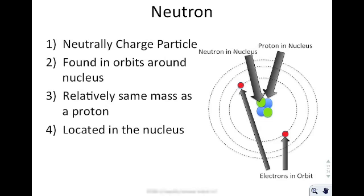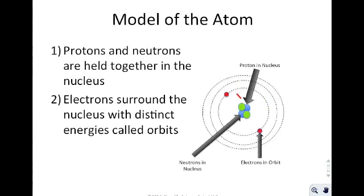So now we have a complete model of the atom: protons and neutrons held together in the nucleus, and electrons surrounding the nucleus with distinct energies called orbitals. This is often referred to as the Bohr model of the atom with the inclusion of neutrons into the nucleus.